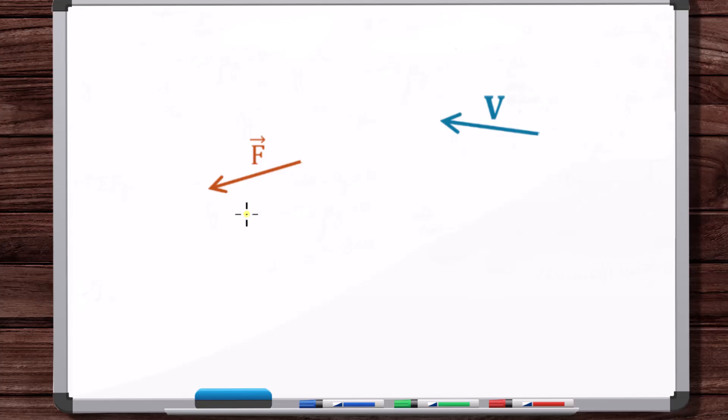then depending on the specifics of a certain problem you're working with or trying to solve, this force vector or this velocity vector could be fixed, sliding, or free. So it depends on the specifics of the problem. A vector being fixed or sliding or free is associated with constraints within a certain problem.